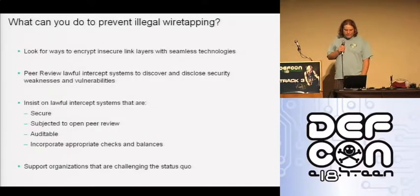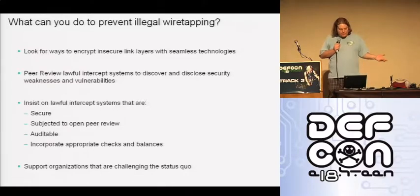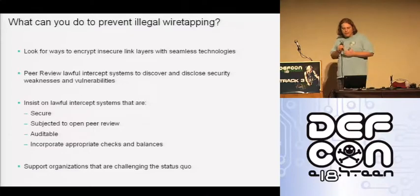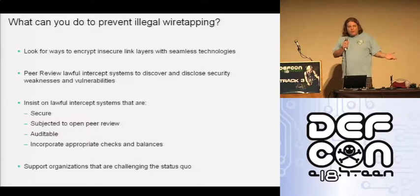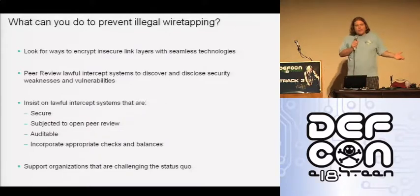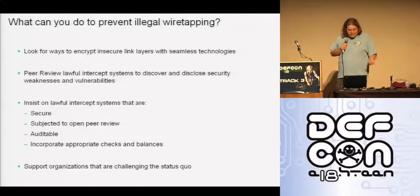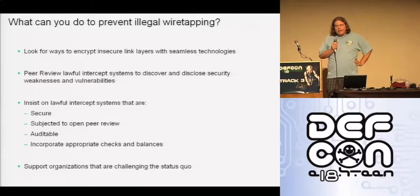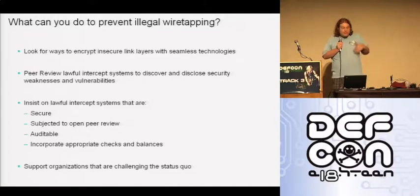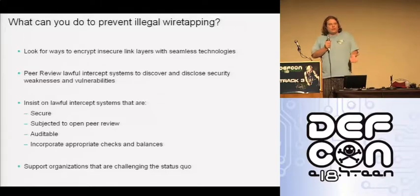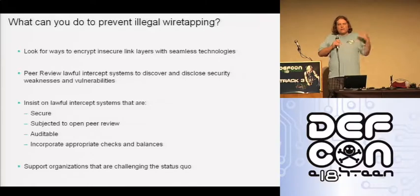So what can you do to prevent illegal wiretapping? You can work on projects involving link-layer encryption as well as end-to-end encryption. You can help peer-review intercept systems on the internet — there's a bunch of technology out there that hasn't been looked at. And you can insist that your ISP and government, if they're requiring lawful intercept to be built into your network, ensure that technology is secure and open to peer review so you can understand how it was architected and implemented. That's my talk — thank you very much.